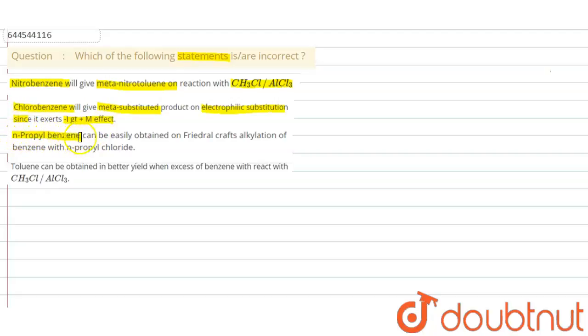Third, n-propyl benzene can be easily obtained on Friedel-Crafts alkylation of benzene with n-propyl chloride. Fourth, toluene can be obtained in better yield when excess of benzene reacts with methyl chloride in presence of aluminum trichloride.